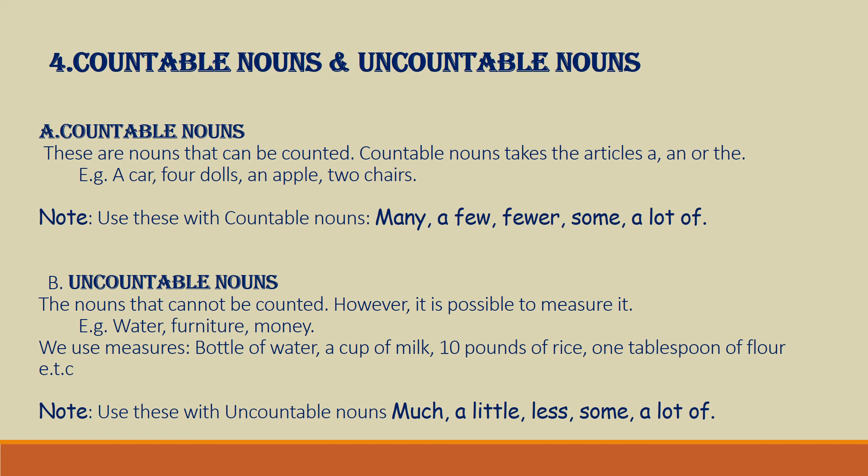Uncountable nouns are nouns that cannot be counted. However, it is possible to measure them. Some examples of uncountable nouns are water, furniture, money. Now we can measure these by saying bottle of water, a cup of milk, ten pounds of rice, one tablespoon of flour, etc. Some of the words that can be used with uncountable nouns are much, a little, less, some, and a lot of.